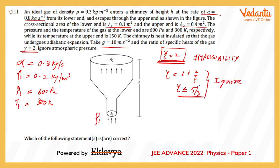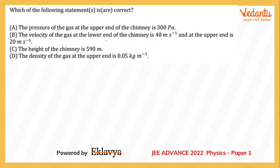Air enters the funnel and undergoes adiabatic expansion as mentioned in the question. When it leaves from the top, its density, pressure, temperature, and velocity all change. We are given that the exit temperature T2 is 150 Kelvin. We now need to check the answer options: the pressure at the upper end, the velocity at the lower end, and other quantities.